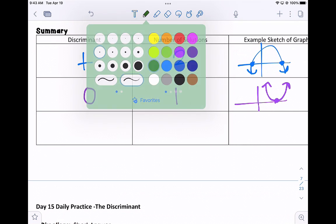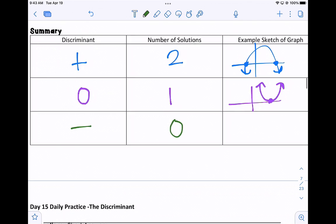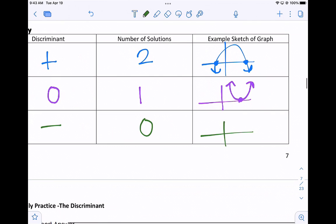And if your discriminant is negative, there are 0 real solutions. And so our graph might look something like this where it doesn't touch the x-axis.